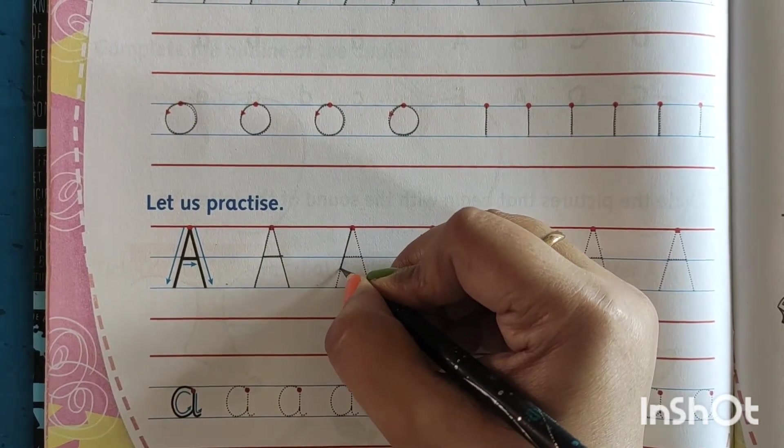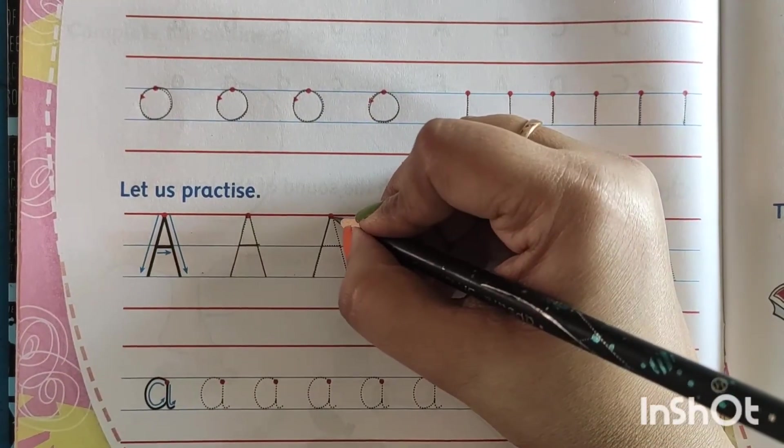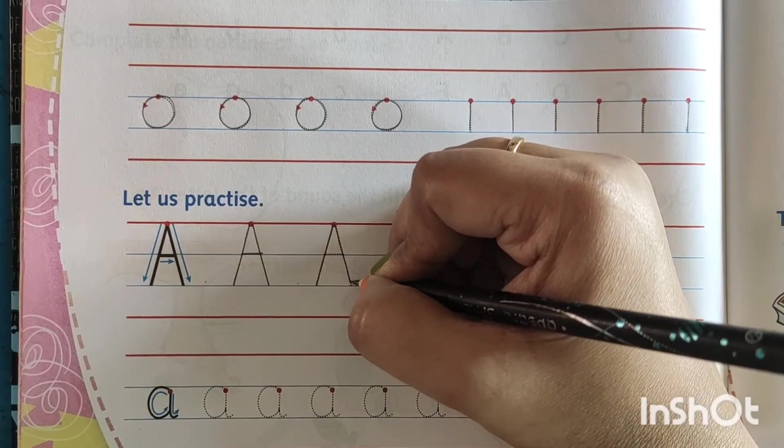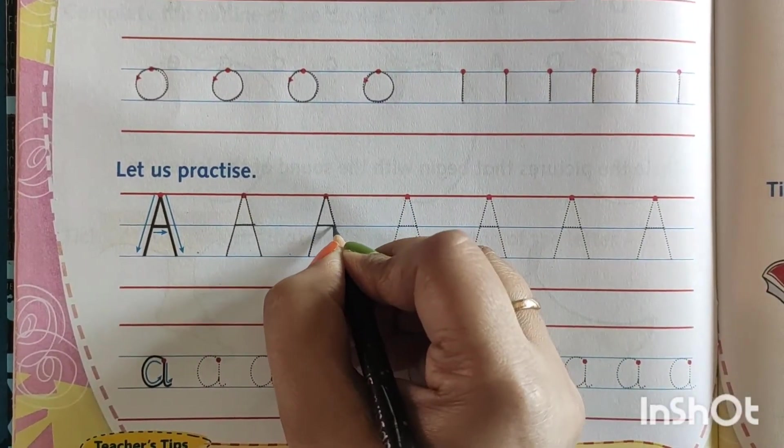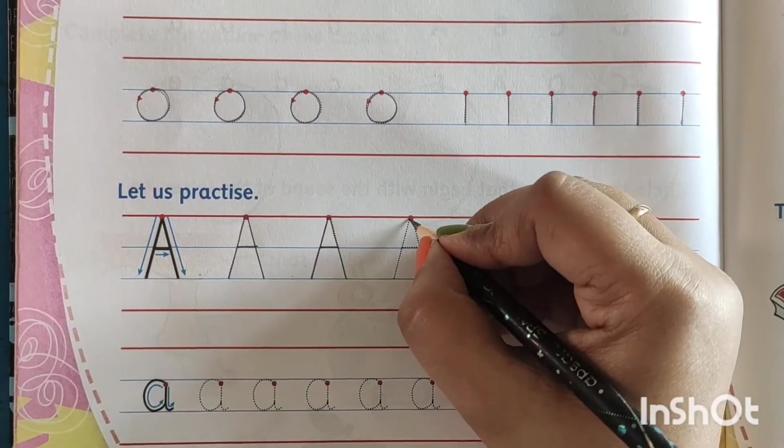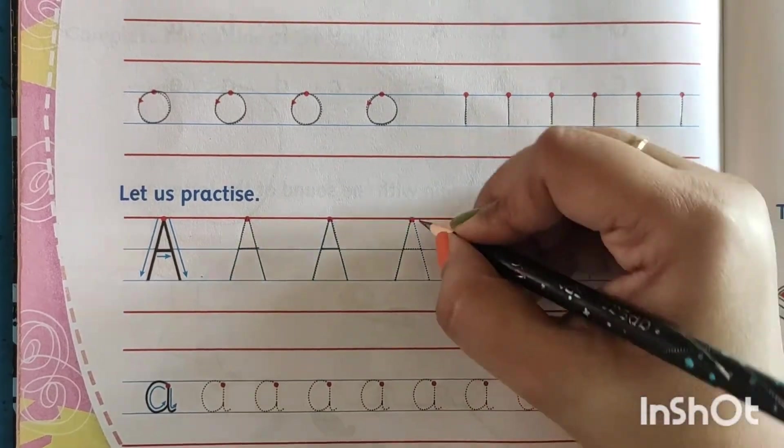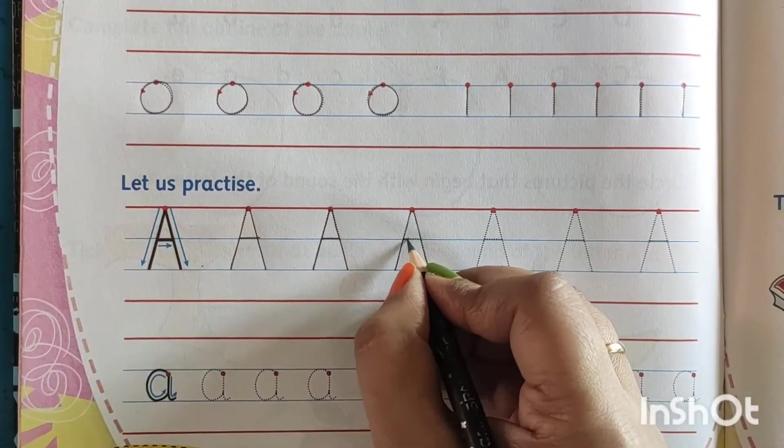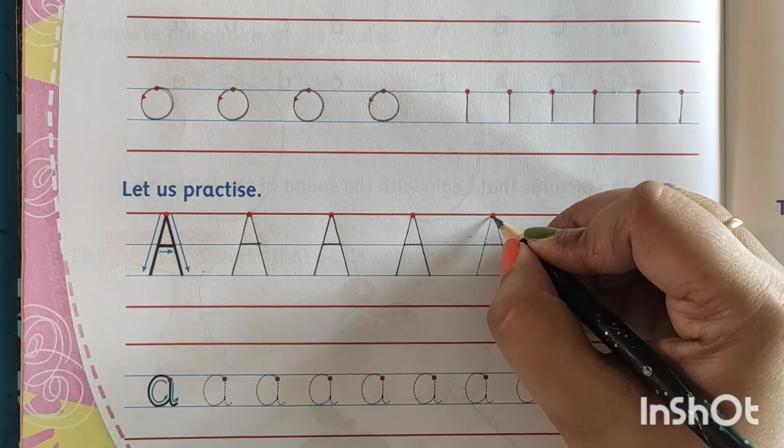Step one is that slanting line. Step two is another slanting line. Then step three is the sleeping line. Understood? So step one, step two, step three. It's very easy.